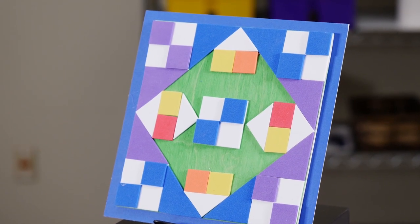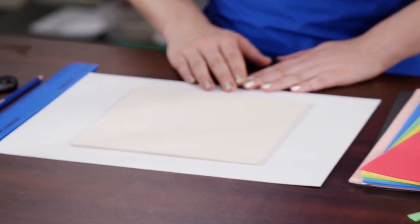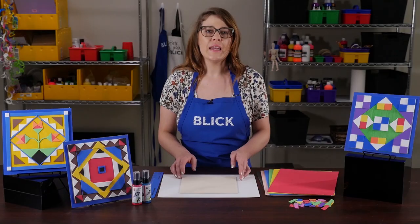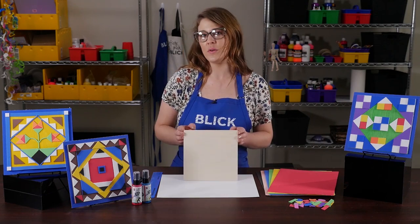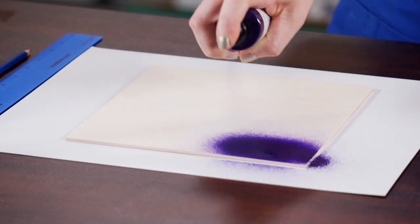While not nearly as time-consuming as quilting by hand, making a wood quilt square results in the same colorful and expressive result. Provide each student with one 8x8 wooden panel. Choose a background color for the quilt square and spray the entire wood panel that color.